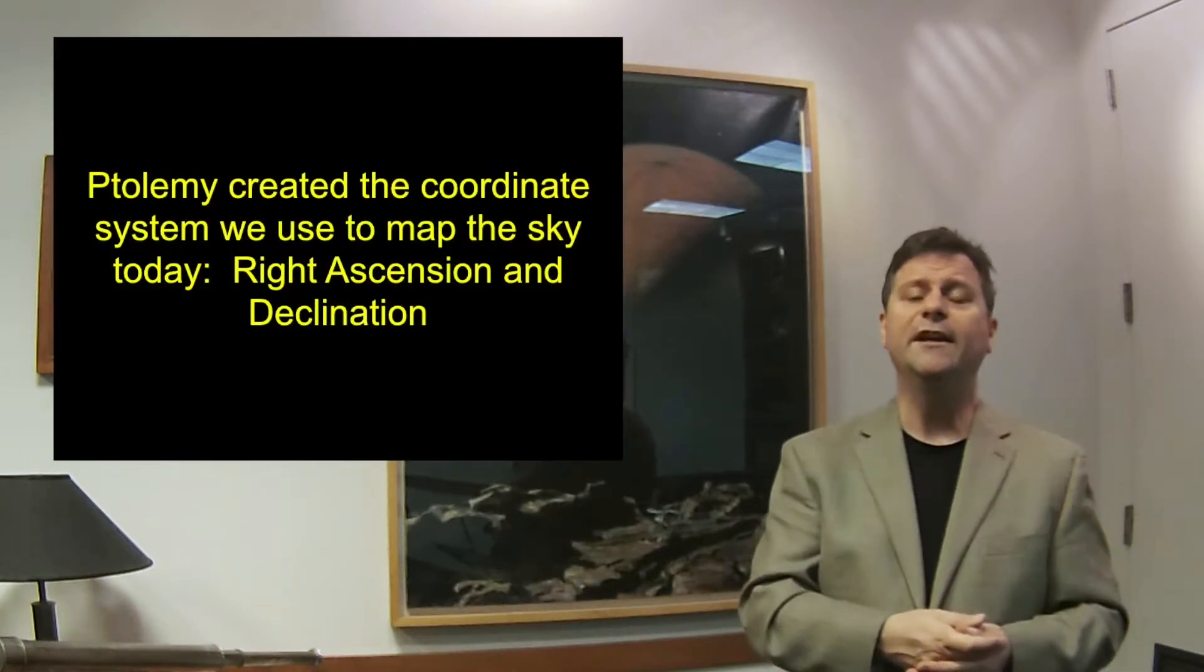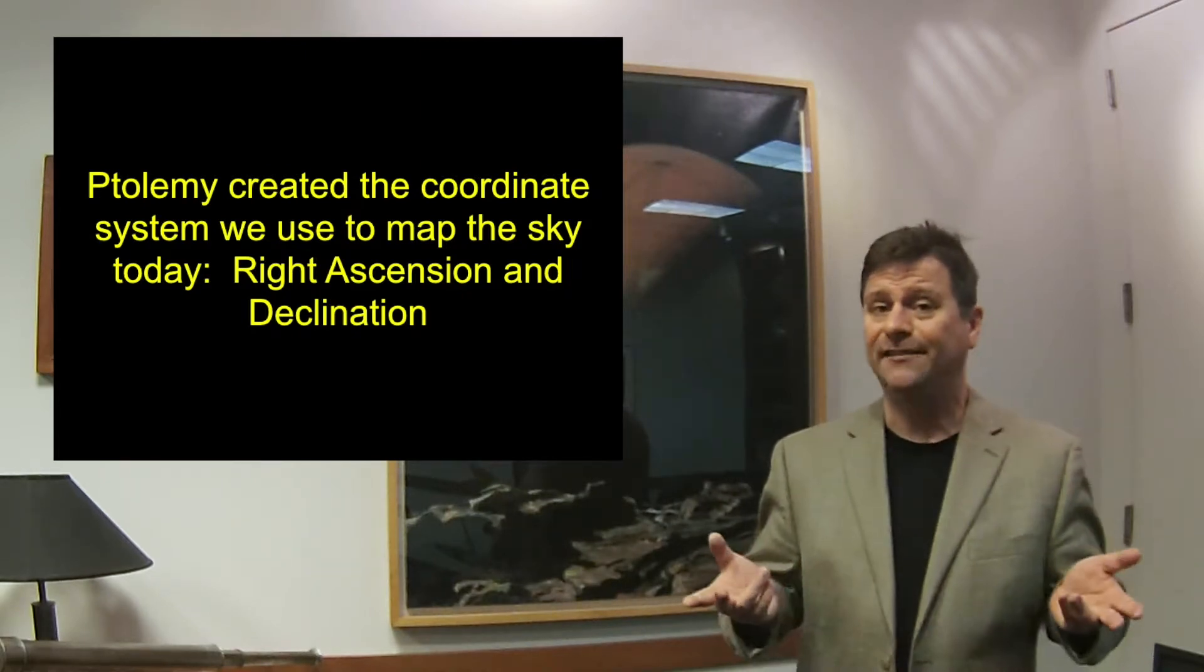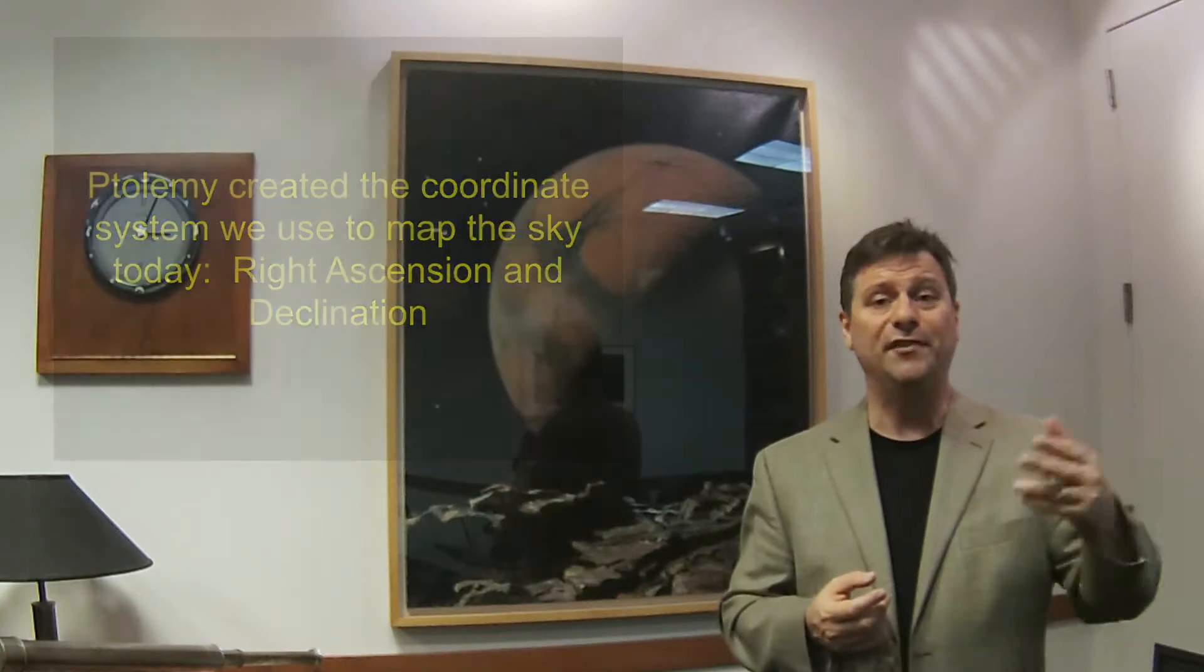And so he created a model of the cosmos, the geocentric model that held sway for almost 1,500 years, all the way up through Galileo's time and beyond, that the earth was at the center. So this is an incredibly important thing. So Ptolemy posited, along with Aristotle, that the earth was at the center. Then he wanted to see how things move. So he created a coordinate system, the equatorial coordinate system, which is the right ascension and declination.